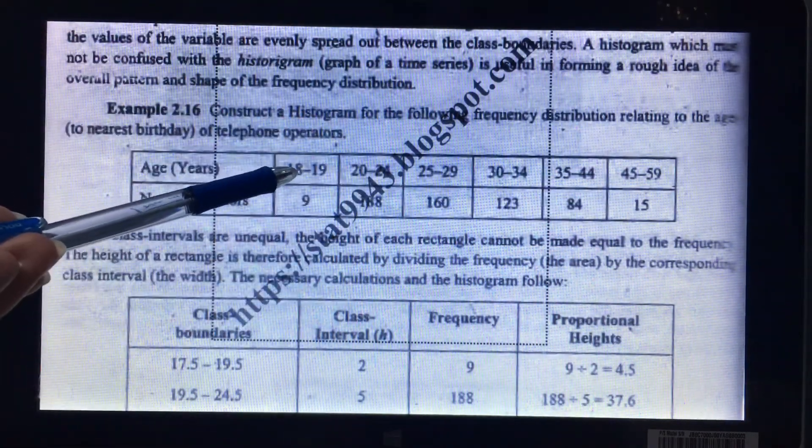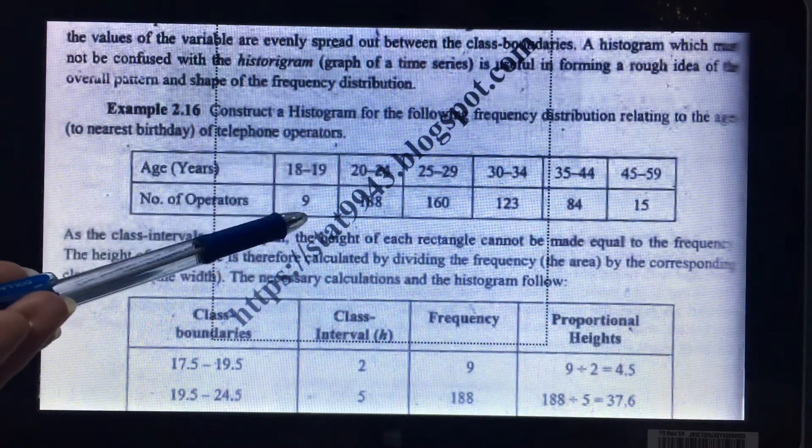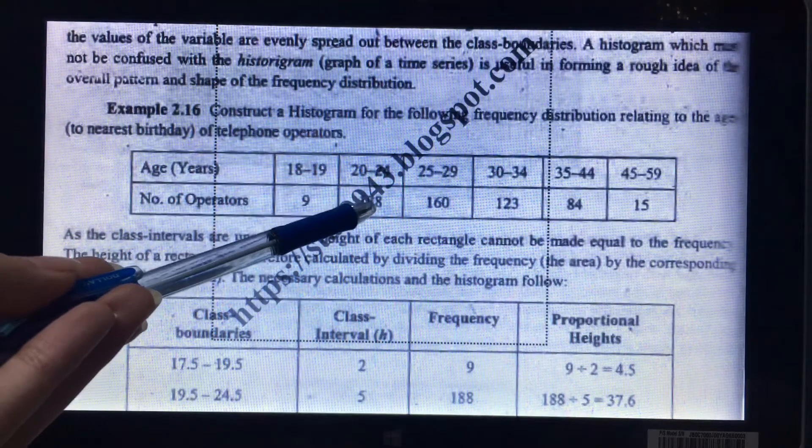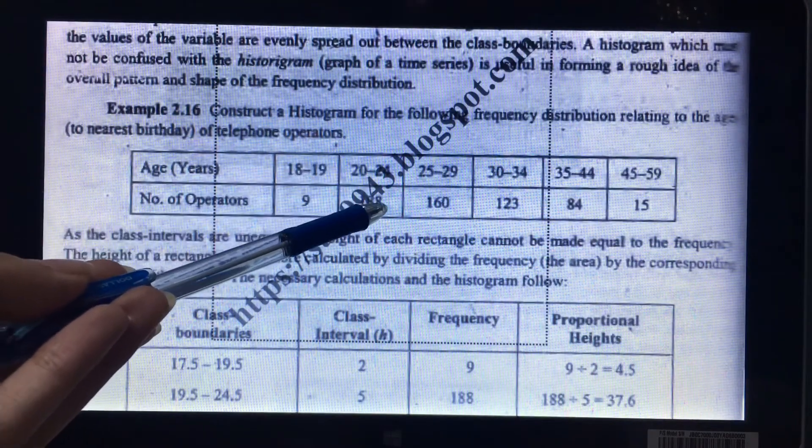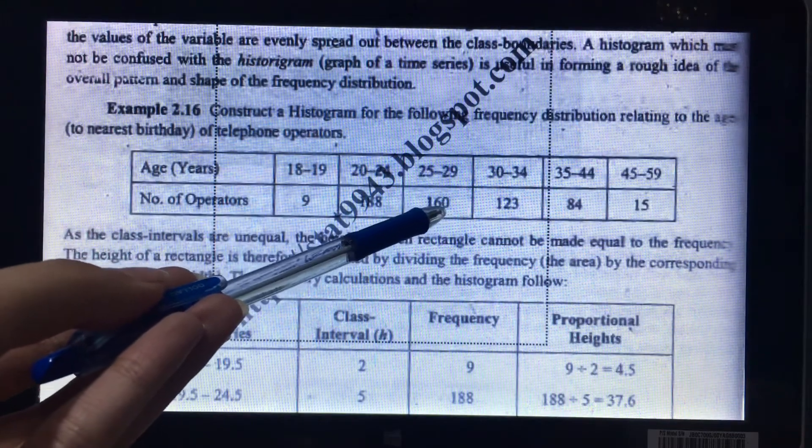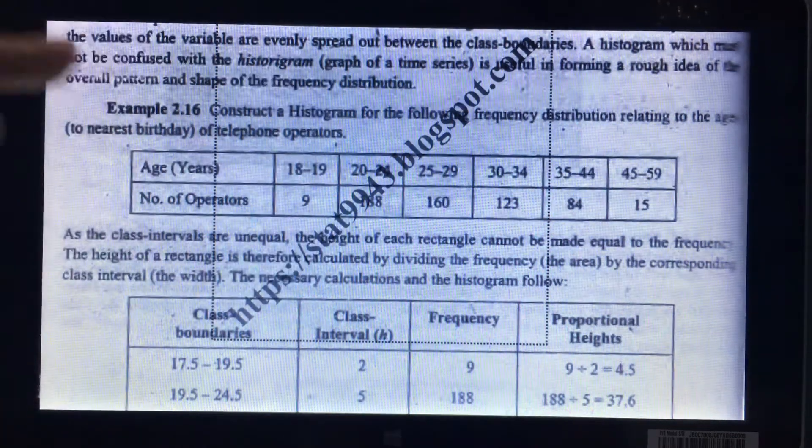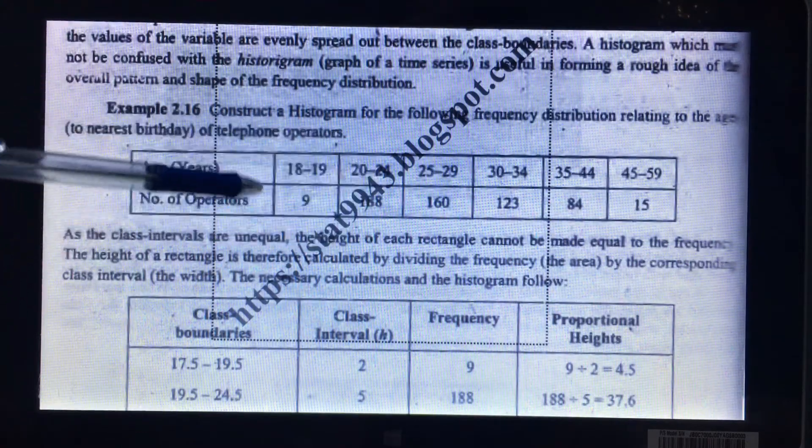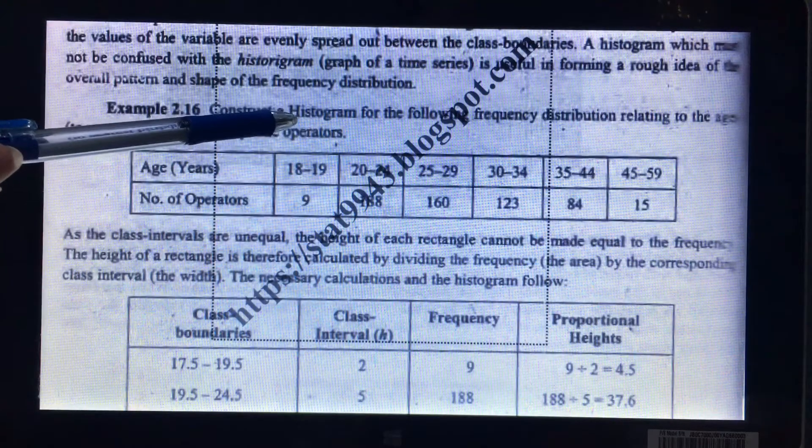It means from the 18 to 19 age group there are 9 operators. From 20 to 24 age group there are 188 operators, and in 25 to 29 I have 160 operators. So this is the statistics I have given, or you can say this is the grouped data, and I have to construct a histogram.